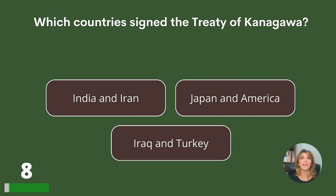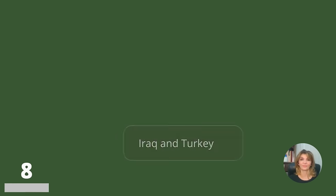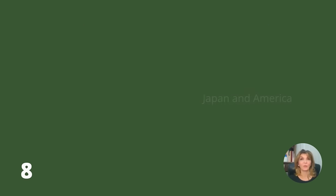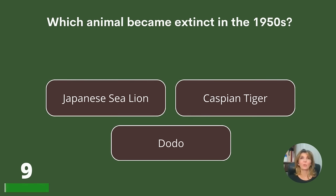Which countries signed the Treaty of Kanagawa? India and Iran, Japan and America, or Iraq and Turkey? Answer: Japan and America, or the United States.